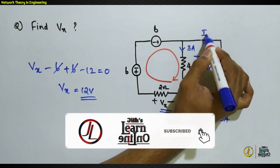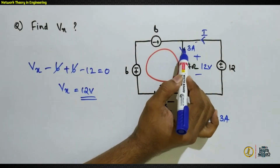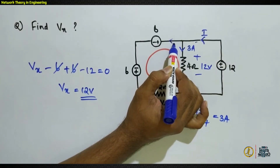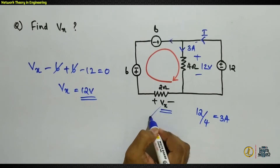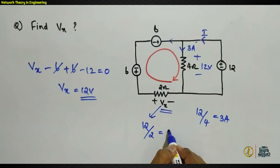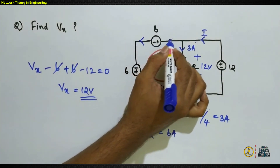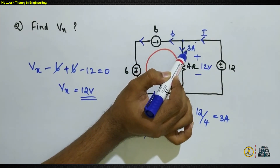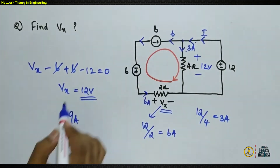To find the current i at this node, apply KCL. We know one branch carries 3 amperes. Since VX = 12 volts across the 2-ohm resistor, the current through that branch is 12/2 = 6 amperes. At the node, 6 amperes and 3 amperes are leaving currents, so the entering current i must equal 9 amperes.